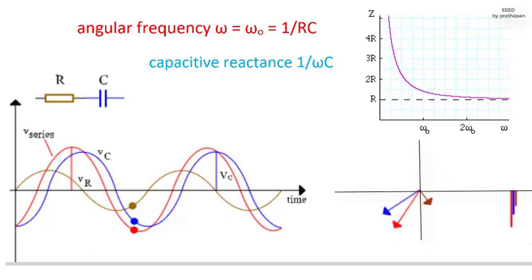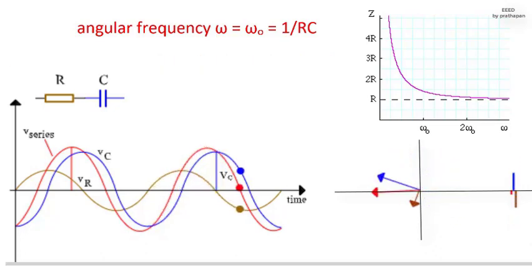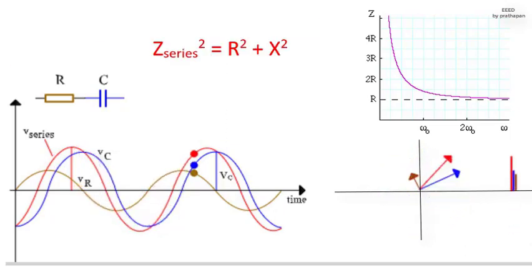Remember how for two resistors in series you could just add the resistances, R series equals R1 plus R2, to get the resistance of the series combination. That simple result comes about because the two voltages are both in phase with the current, so their phasors are parallel. Because the phasors for reactance are 90 degrees out of phase with the current, the series impedance of a resistor R and a reactance X are given by Pythagoras law. Z squared equals R squared plus X squared.